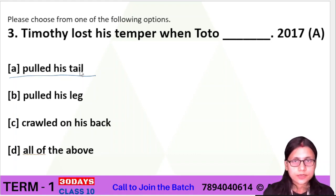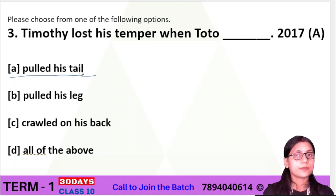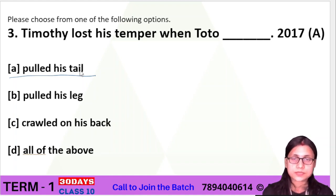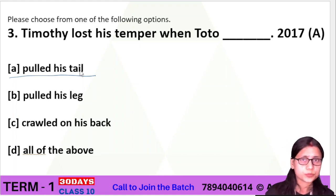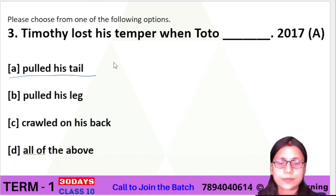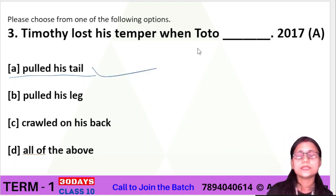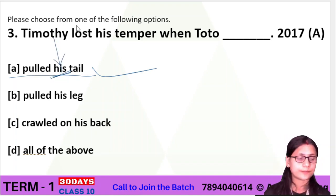Toto was very funny — Toto was a monkey, and he pulled Timothy's tail. So Timothy lost his temper. Toto pulled his tail; 'his tail' here refers to Timothy. That is what caused Timothy to lose his temper.